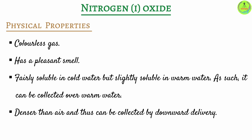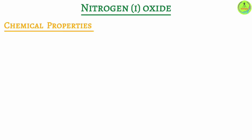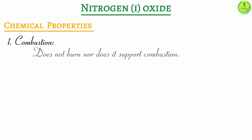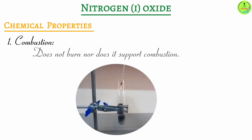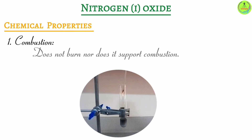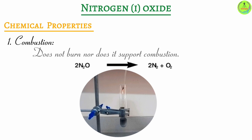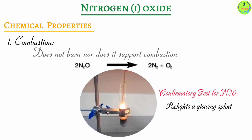Chemical properties of nitrogen one oxide. First, combustion: it does not burn, neither does it support combustion. If you introduce a glowing splint into a gas jar containing nitrogen one oxide, the glowing splint will relight. This does not mean it supports combustion — the heat from the splint causes the nitrogen one oxide to dissociate, forming oxygen and nitrogen, and it is the oxygen gas that relights the splint. This is the confirmatory test for nitrogen one oxide.